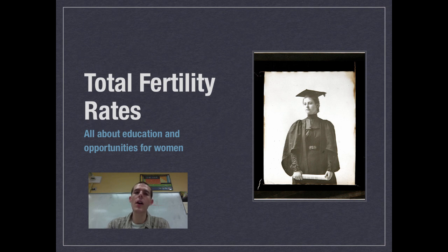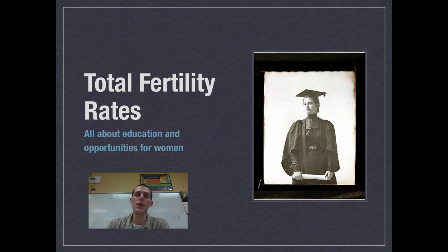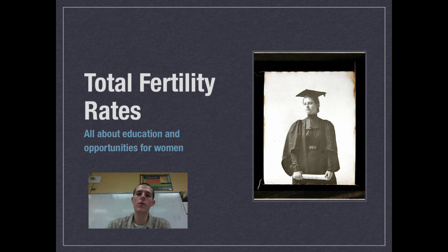As we talk about population growth, probably the biggest driver or indicator is going to be the total fertility rate. Total fertility rate is the number of children that each woman in a country has on average. So the average woman in Ghana might have three or four kids — it's an average across the country. In general, the more developed a country is economically, the lower the total fertility rate. As countries move through the demographic transition, birth rates go down.